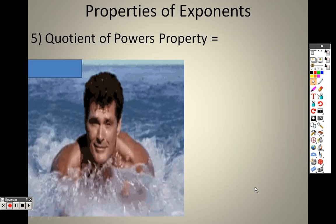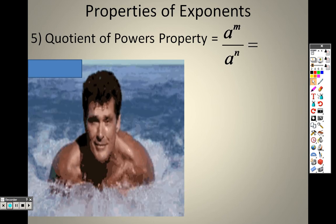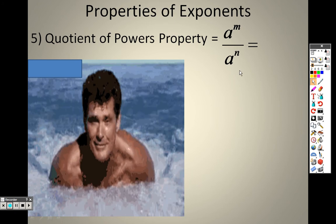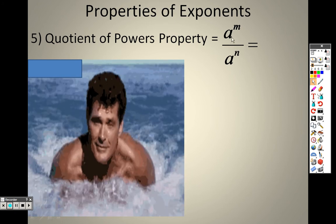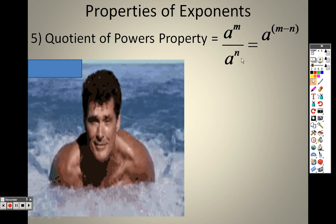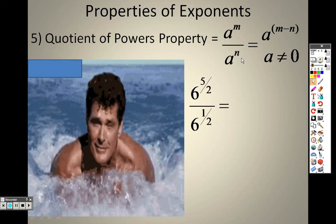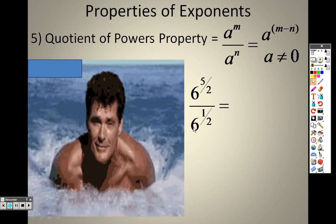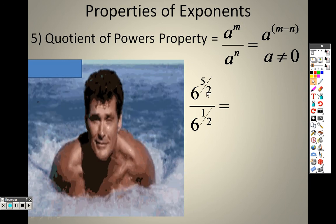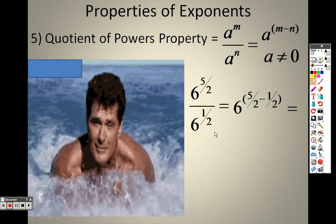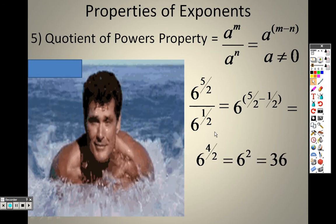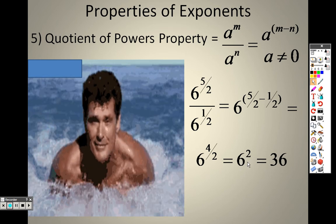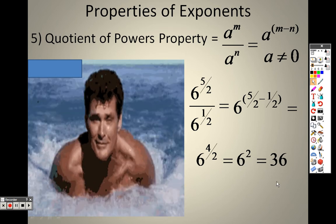The Quotient of Powers property: when you have a division sign, you take the two exponents and subtract them — that's m minus n. I have the same base, six and six, so I take five-halves minus one-half, which is four-halves. Four divided by two is two, so it's 6 squared, and 6 squared is 36.